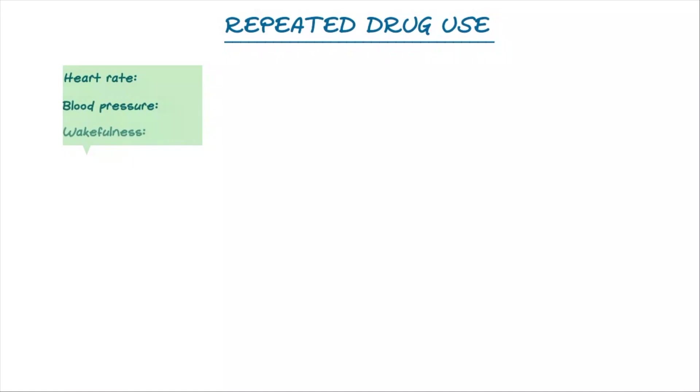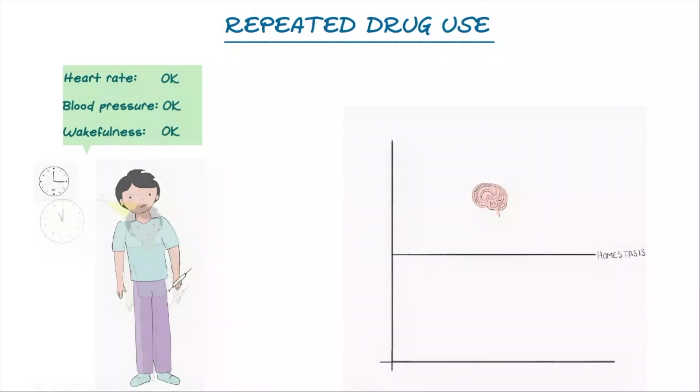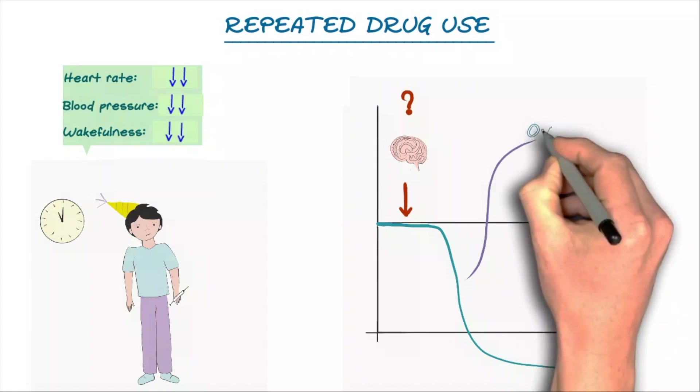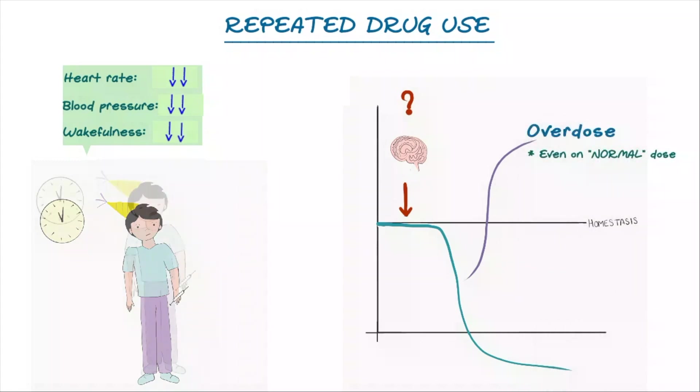Now, on the flip side, let's just say that you use the drug in an unfamiliar setting, like at 11pm at a party. Well, in that situation, your body is not ready for the drug. And there's no physiologic counterbalance to help offset the effect of the drug. When that's the case, it can lead to overdose, even on a dose that the person's been normally taking. And that's oftentimes what happens.